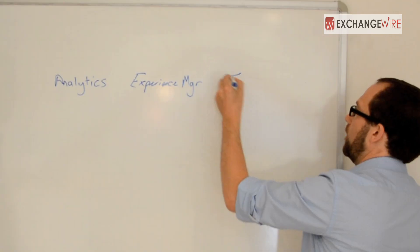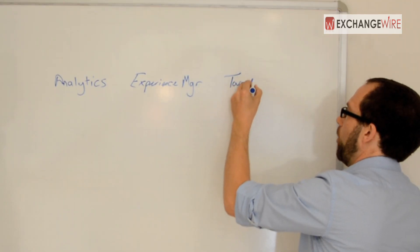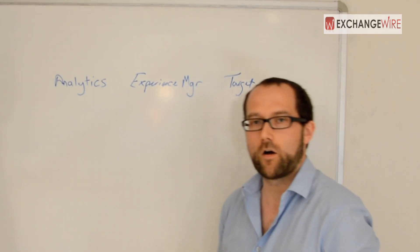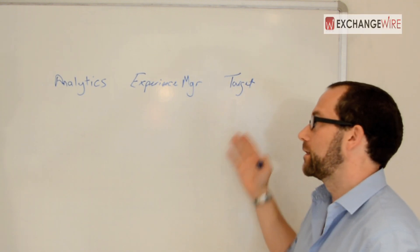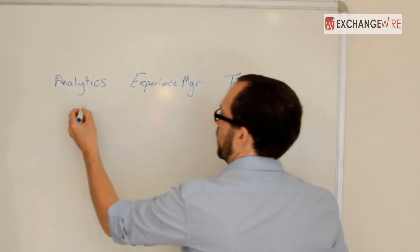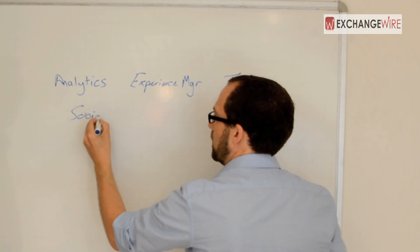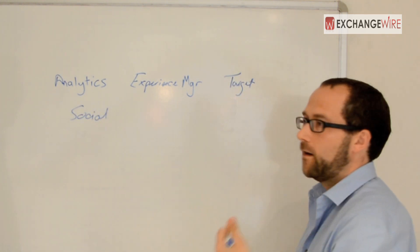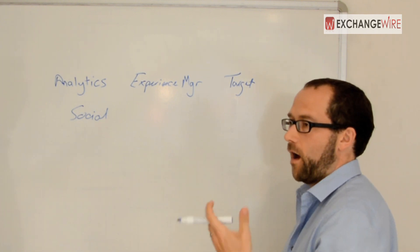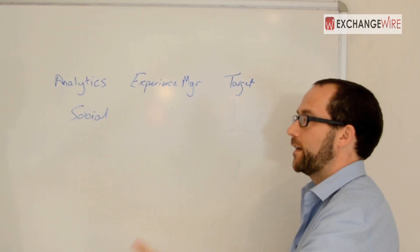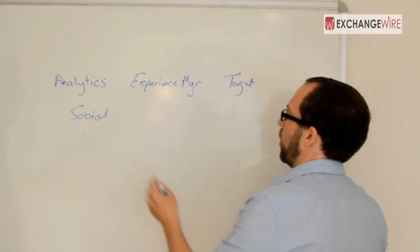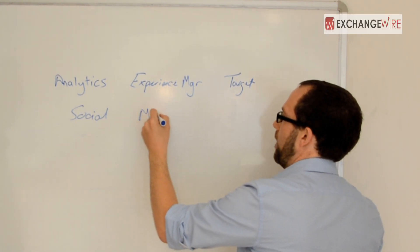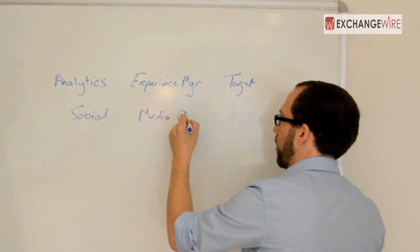Then we've got Target. A lot of people may have heard of the Test and Target products. So that's all about optimization of experiences. And then we've got social, which is publishing, moderation, community management on networks, on Facebook and Twitter, but also listening across thousands, millions of different blogs and websites.